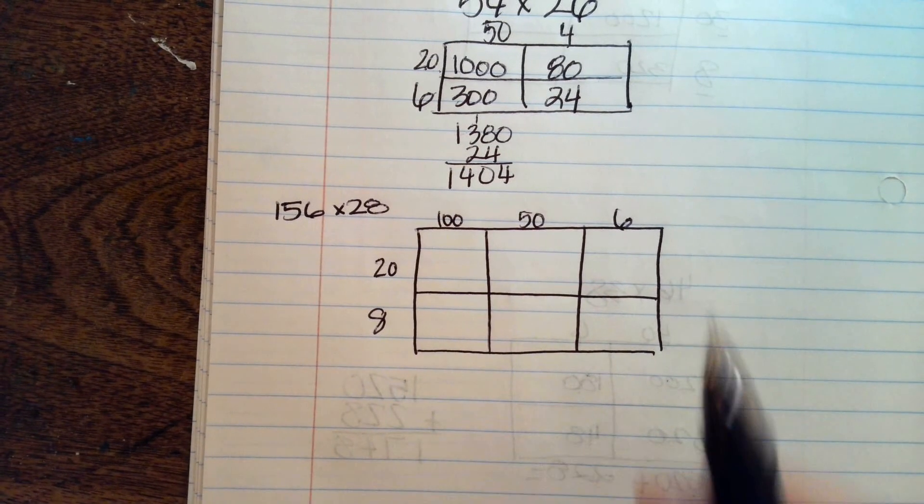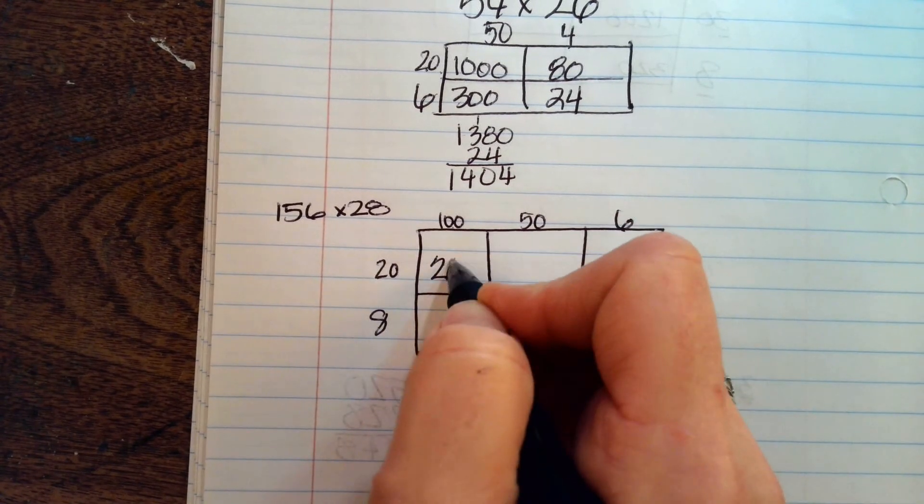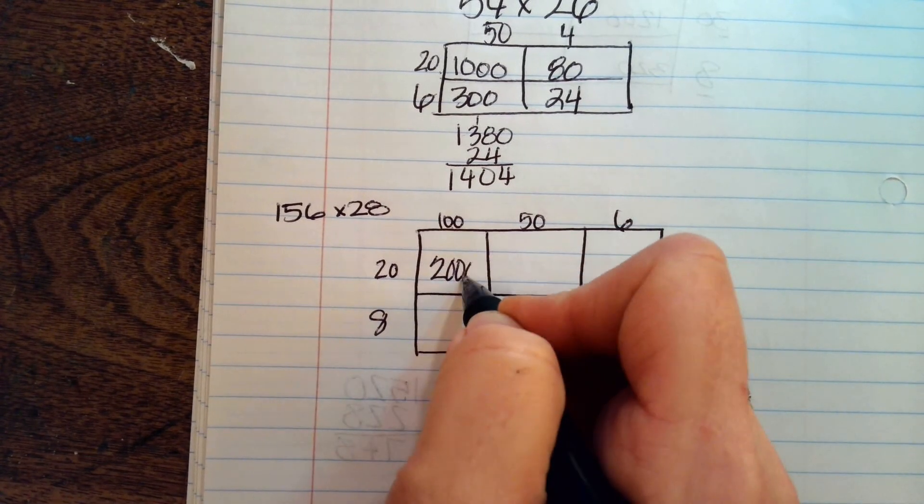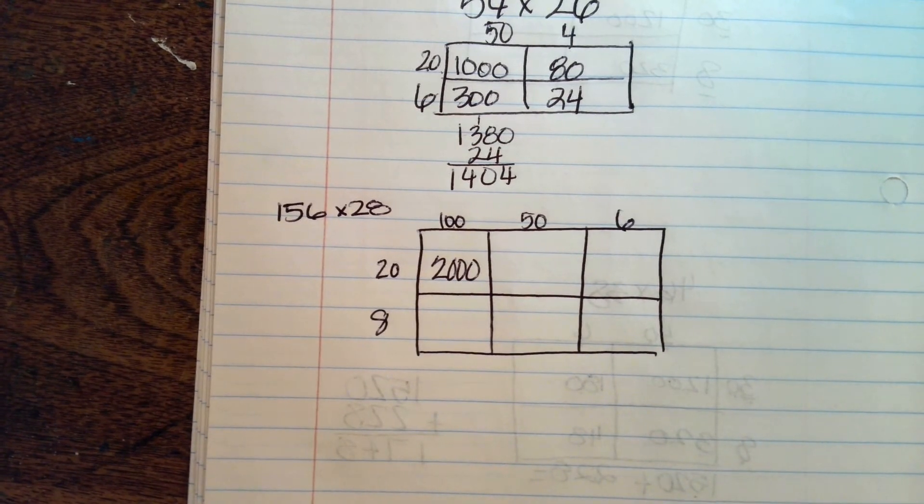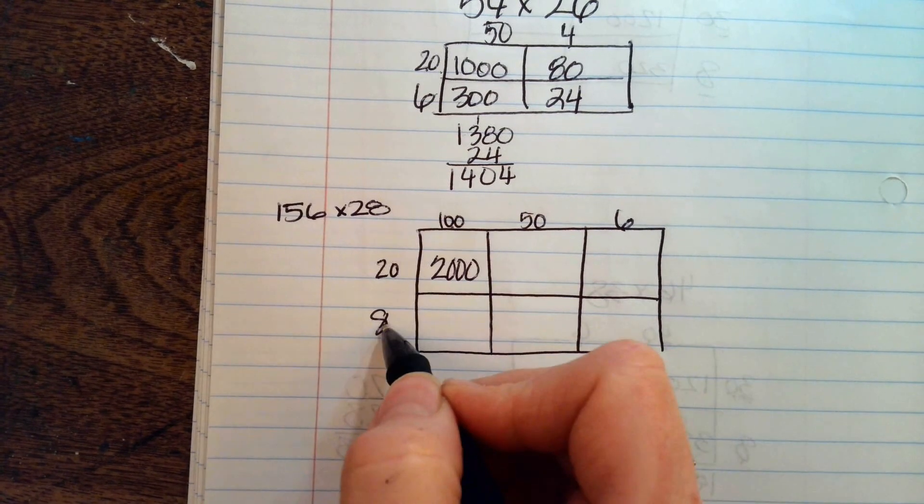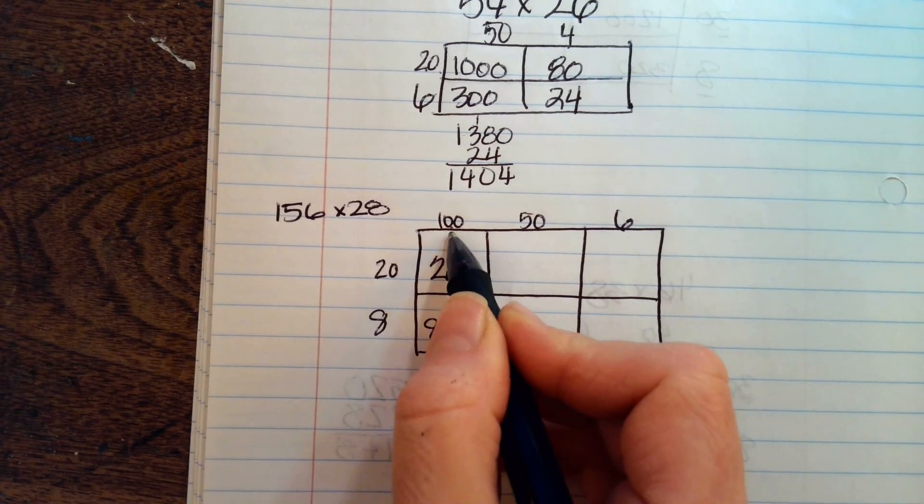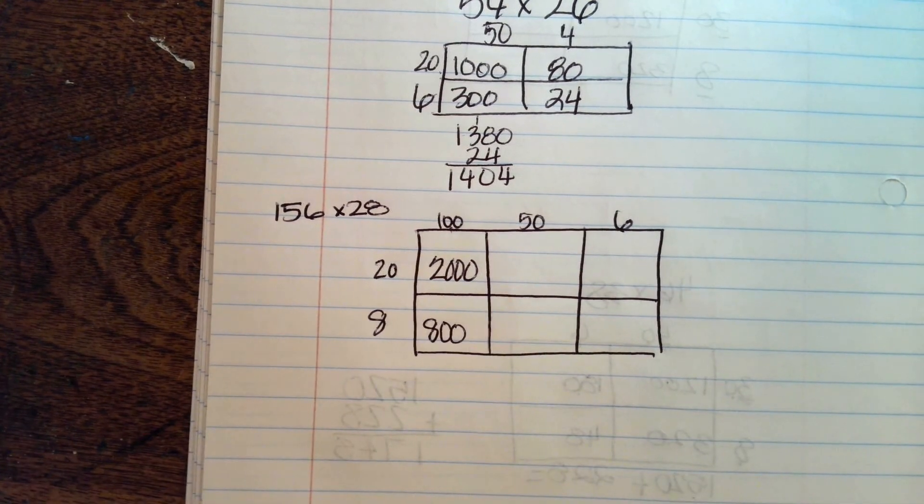Now for your first one, you're going to do 2 times 1 is 2. We have two zeros here. We have one zero here. So we're going to have a total of three zeros. Now we're going to do 1 times 8 is 8 and we have two zeros here. So we're going to put them down here. Does that make sense to you so far?